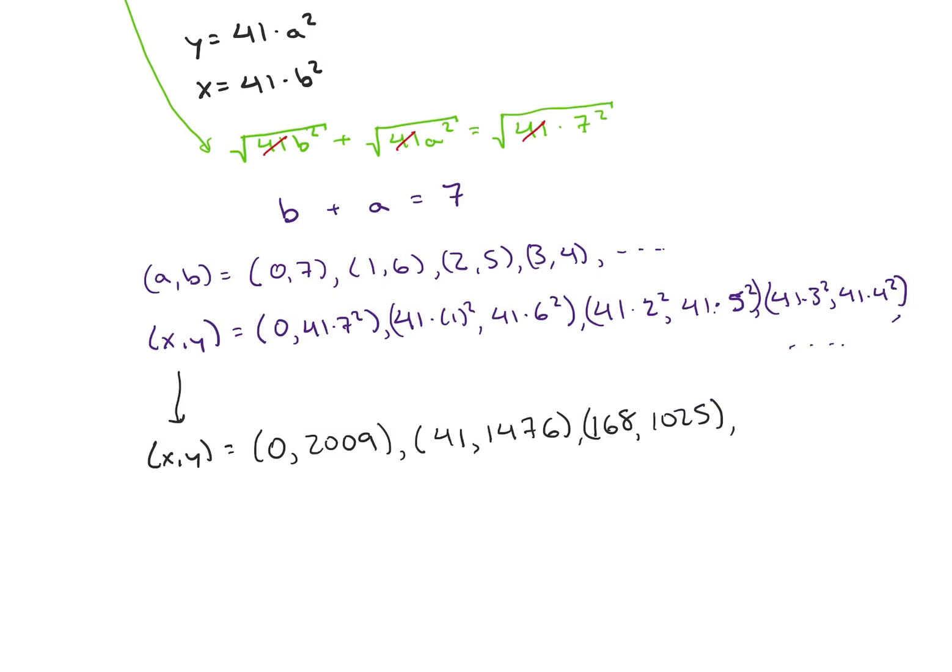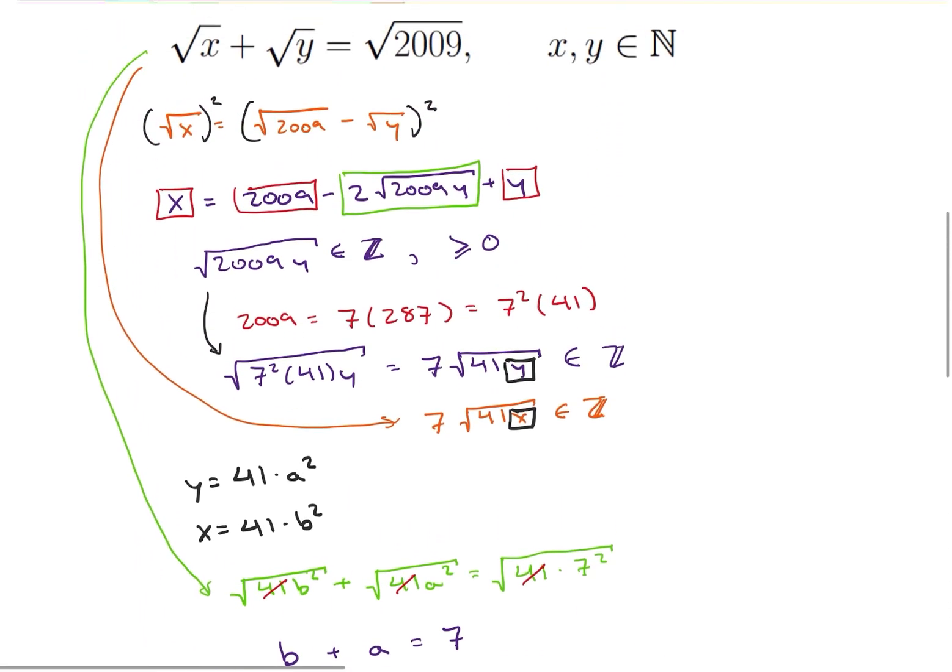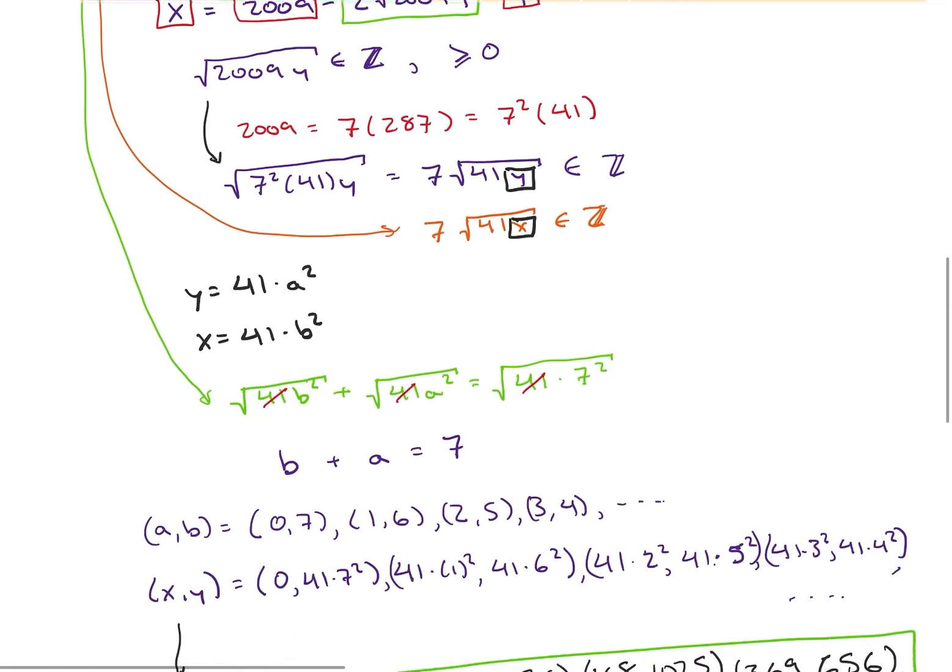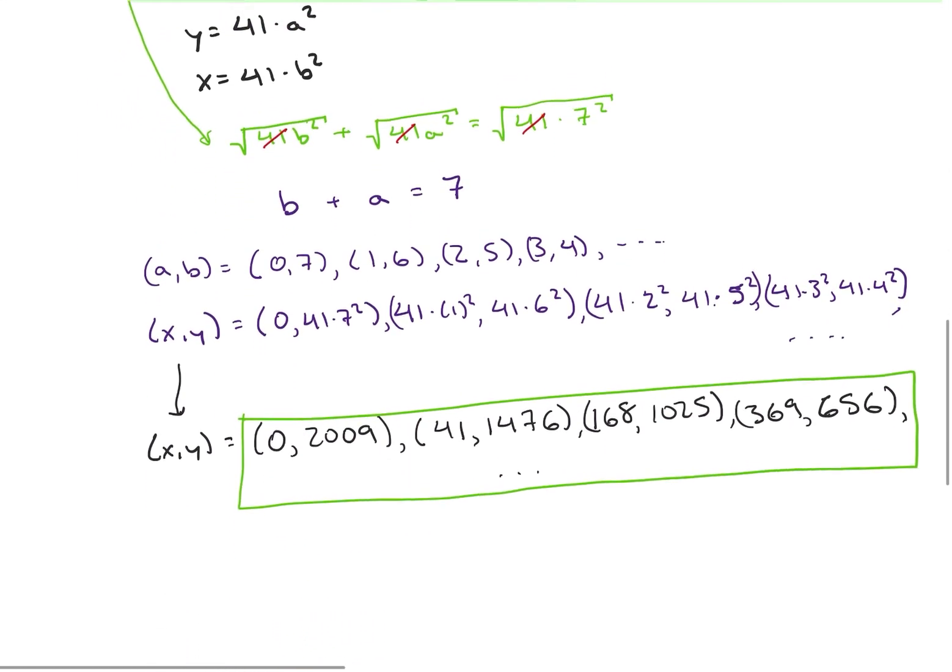or (369, 656), or the mirror image of any of those guys. And if I include those mirror images, then that is actually going to be my solution set. So that will be all of the ordered pairs. So those eight ordered pairs are going to be all of the ordered pairs that satisfy the equation square root of x plus square root of y is equal to the square root of 2009.